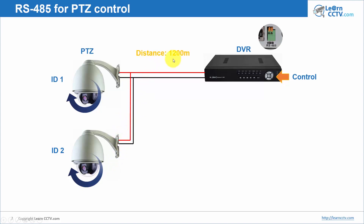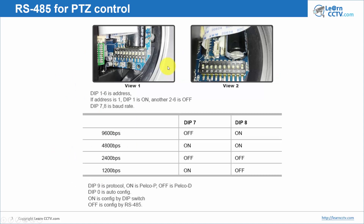The distance for RS-485 is usually up to 1200 meters. Here's an example of a camera DIP switch. You open your camera and you'll find DIP switches along with documentation explaining how it works. It's not the same for every camera — different manufacturers do this differently, so you need to check your documentation.